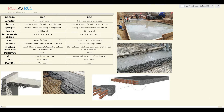As you can see, we have a table on our top left side which covers all the main differences between both of them. There are a total of three columns: the first column has the points or main topics, and then we have the PCC column and the RCC column. So the first point is the definition. PCC stands for plain cement concrete, and RCC is reinforced cement concrete.